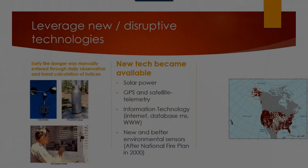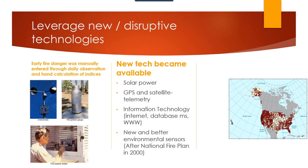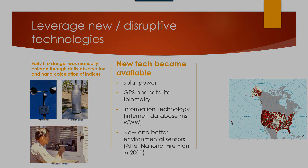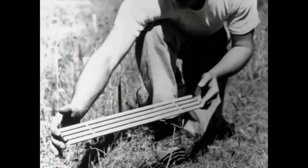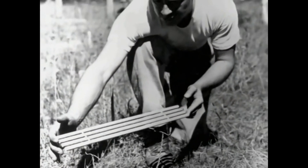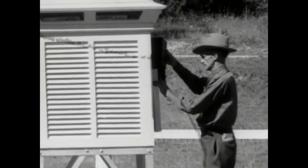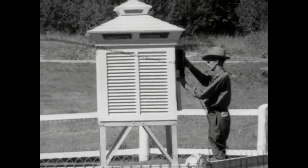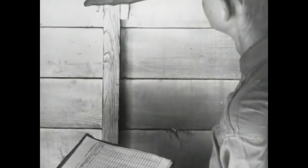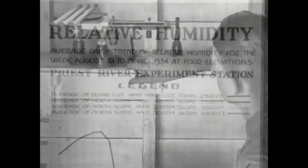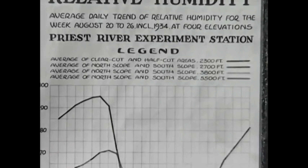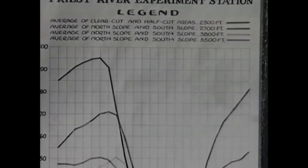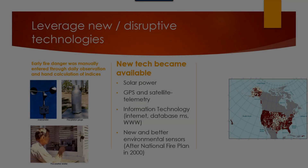A lot has changed since 1970 to 1978. In the early days, a fire danger rating was manually entered — observations were taken from shelters, manually recorded on paper, and hand calculated so that the indices could be communicated.